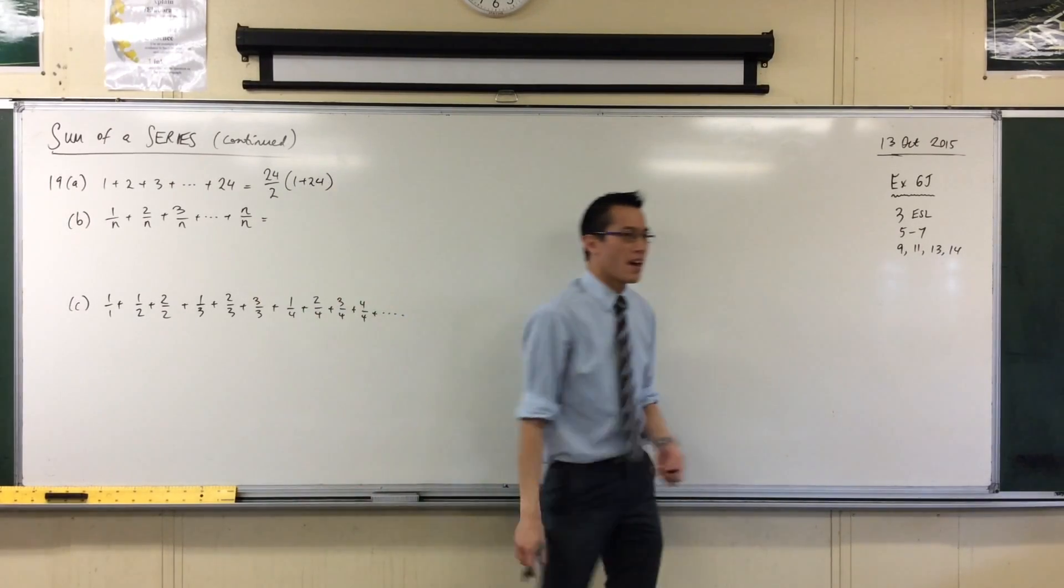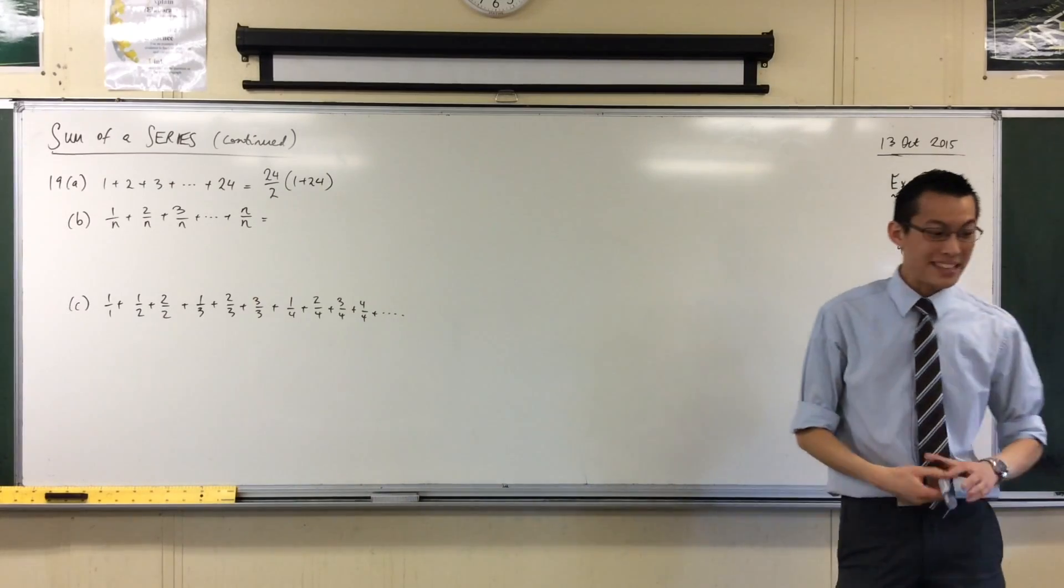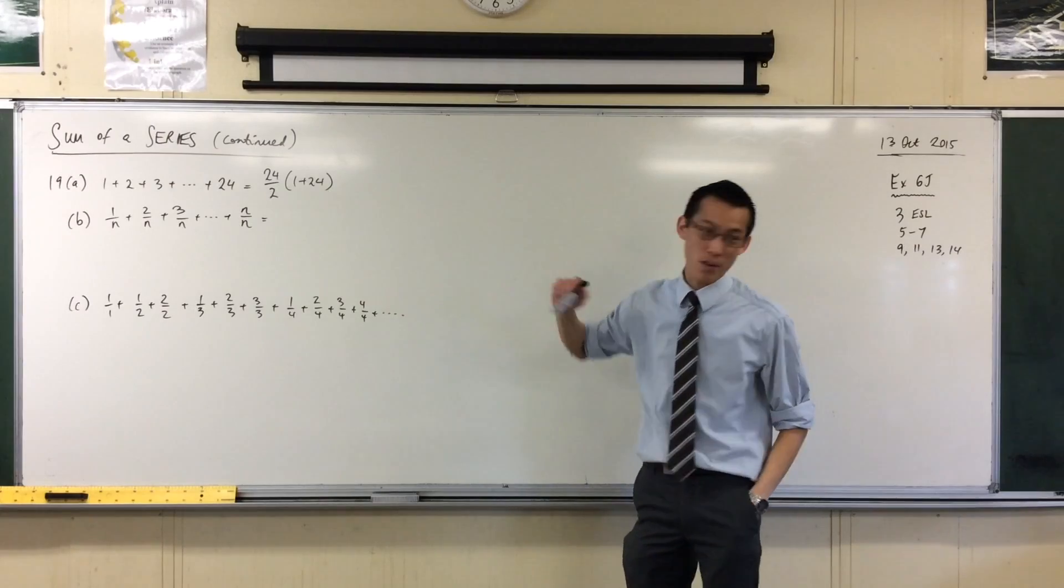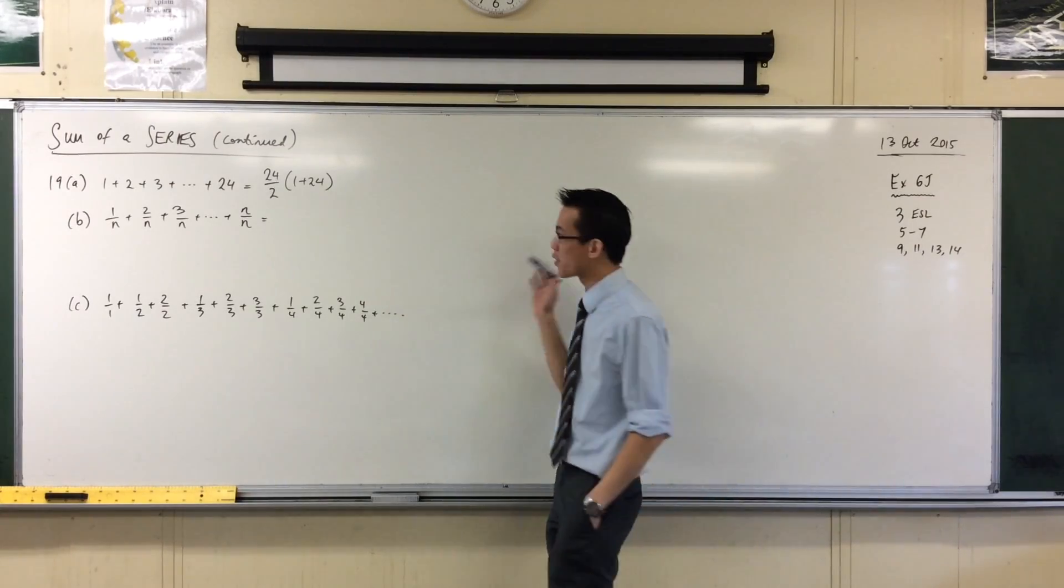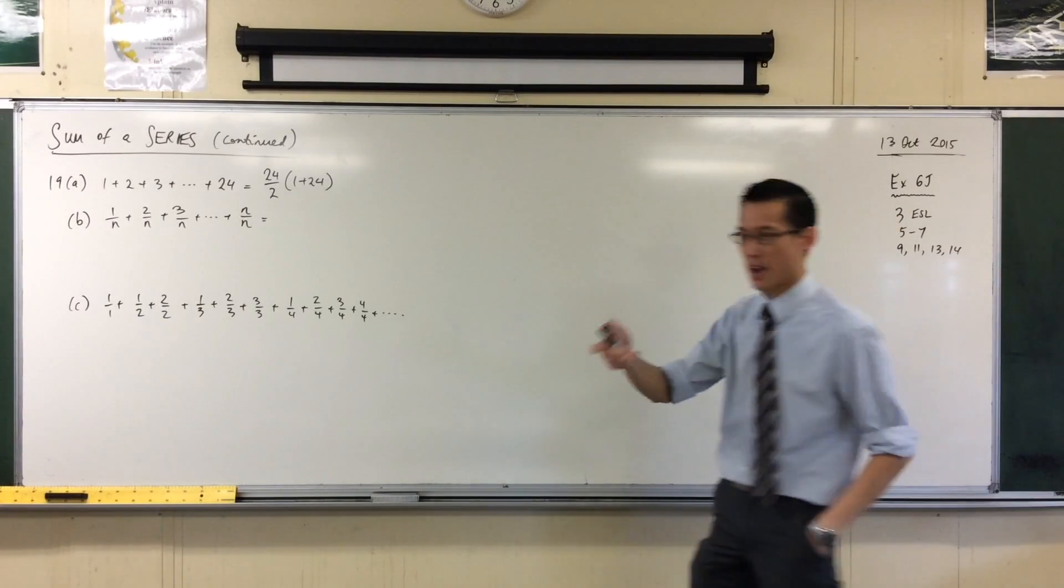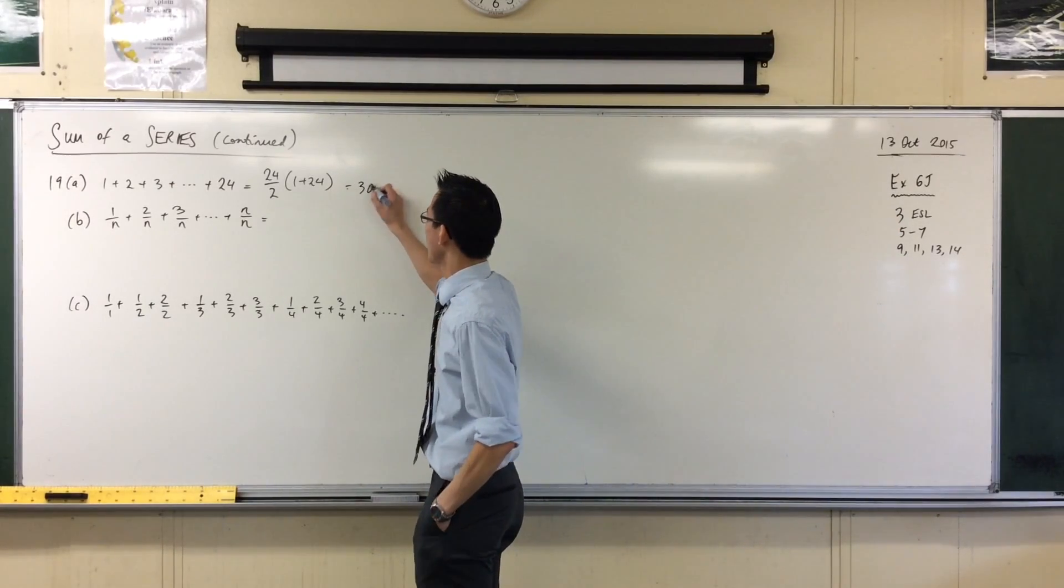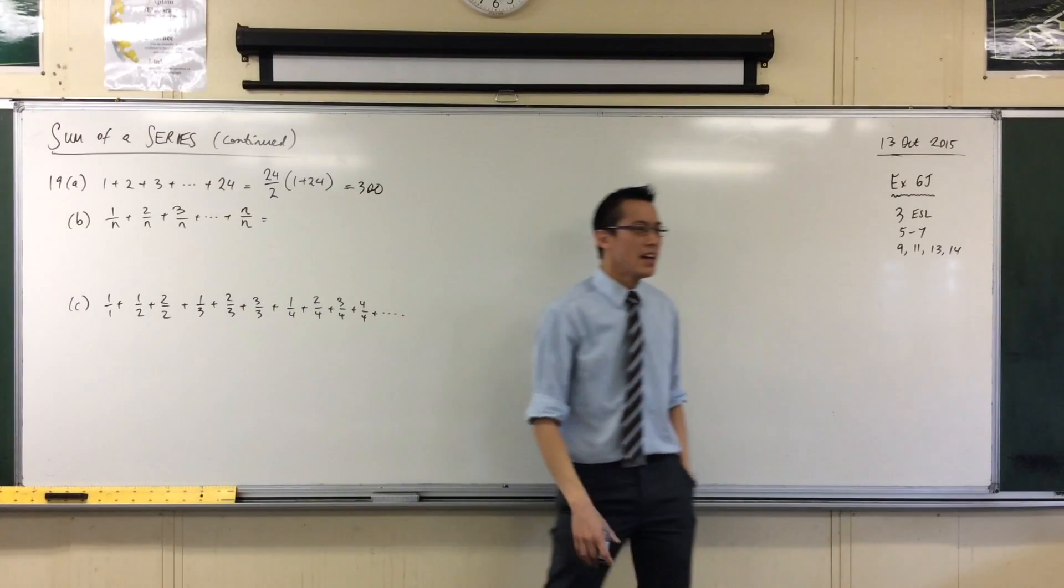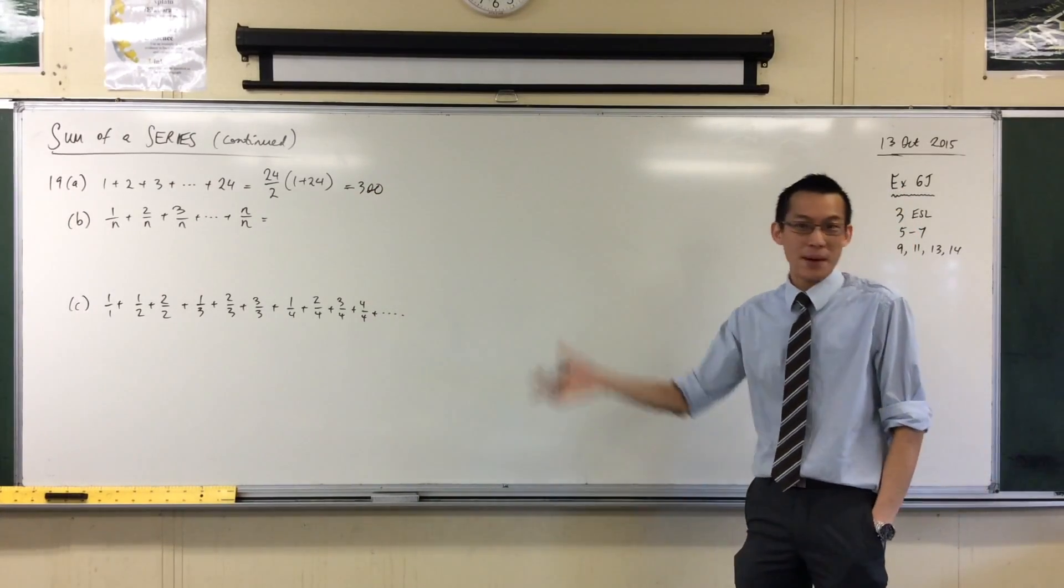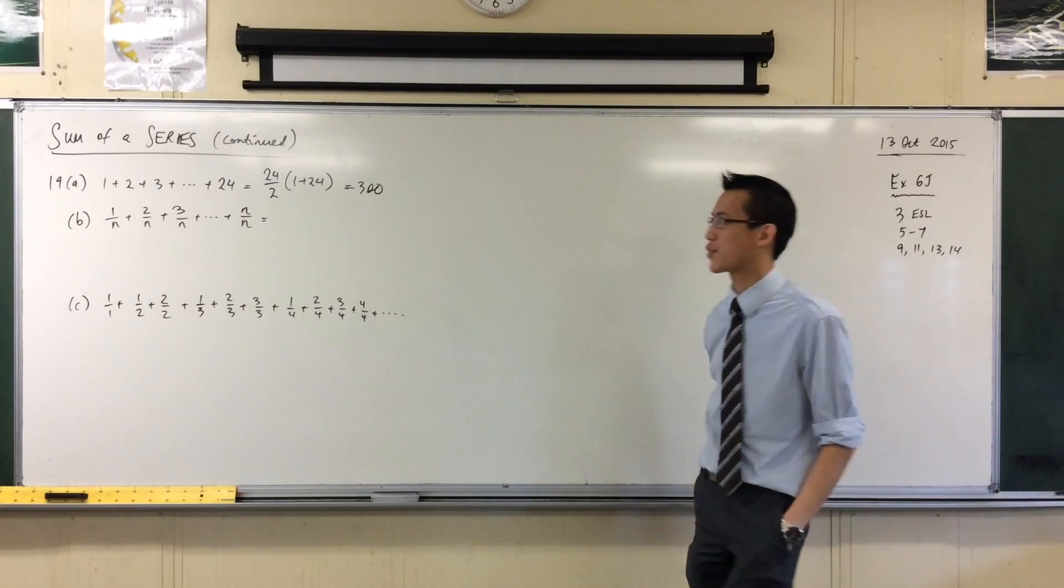Okay, I'm going to be a little bit naughty and write across the page, whiteboard, right? 24 on 2 is 12, 1 plus 24 is 25, 25 by 12 is 300. Okay, so there you go, part A. We have no idea what it's about, but it's done. Not too difficult.